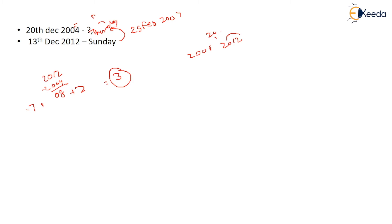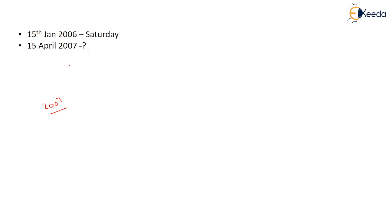Next question: 15 January 2006 is Saturday — what is 15 April 2007? Big year minus small year gives 1, and these are not leap years so no need to worry. Now you have to calculate the date as I told you — when you are coming ahead, you have to consider it as 15 January 2007 first.